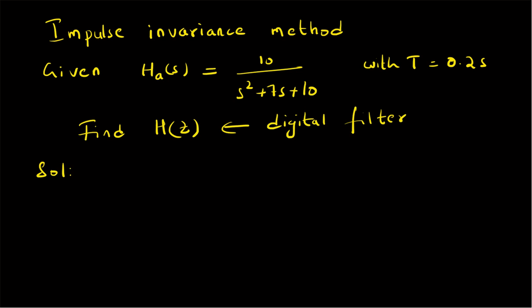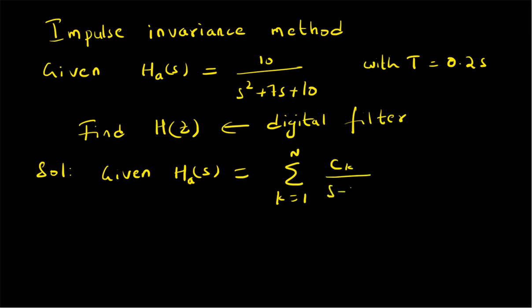This conversion depends on the following principle. Given H_a(s) written in the form summation k=1 to N of c_k divided by (s - p_k), where c_k are the coefficients and p_k are the poles of the system function H_a(s).